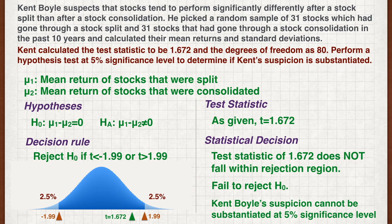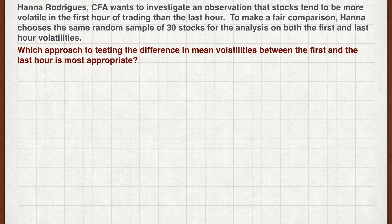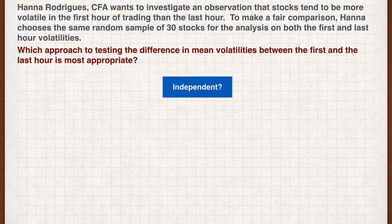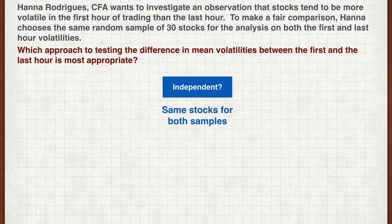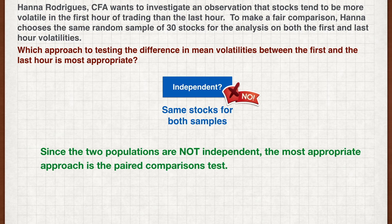Let's try another question. The first question we need to ask is if the two populations can be assumed independent. Since the same stocks are chosen for both samples, the volatilities of the two samples cannot be independent. Therefore, the most appropriate approach is the paired comparisons test.